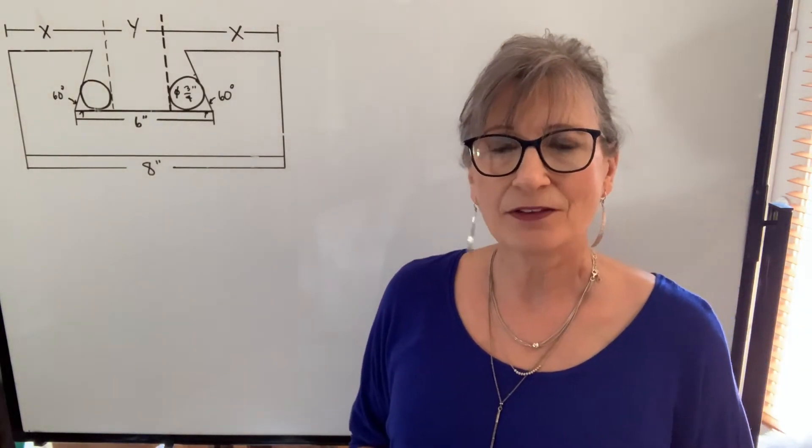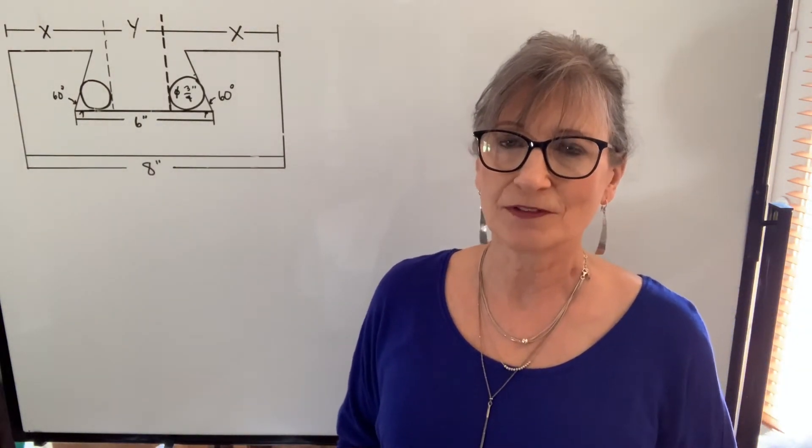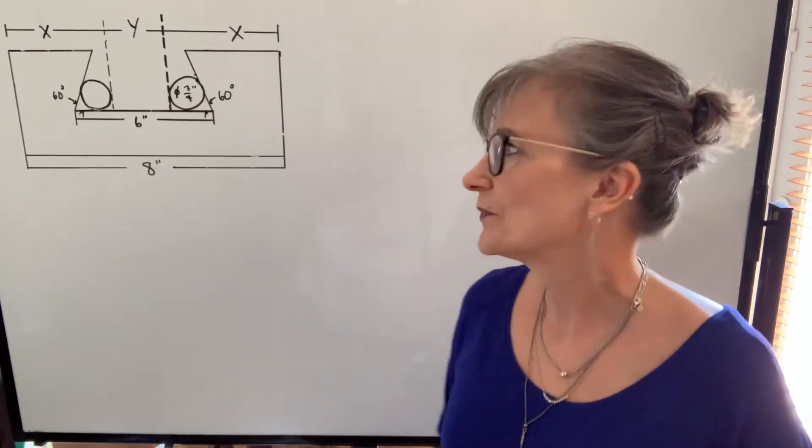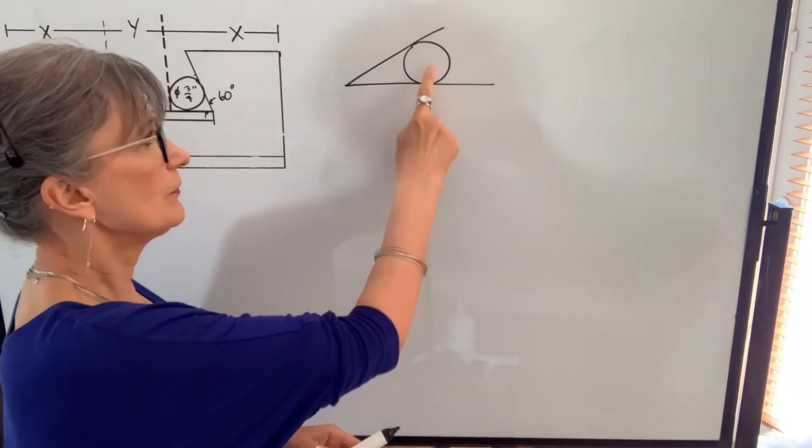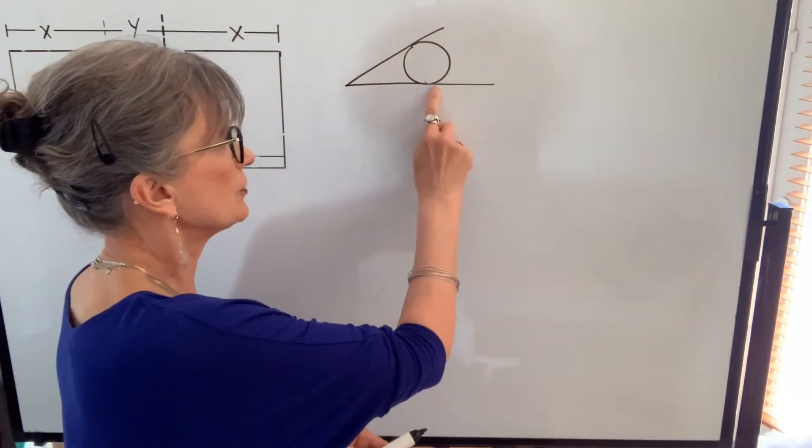We're going to use the same math that we did with the external dovetails. So just a reminder, if you have a circle, and if you have a line drawn tangent to that circle,